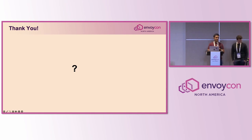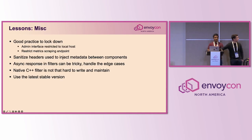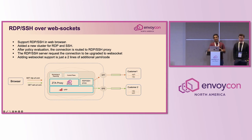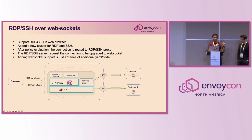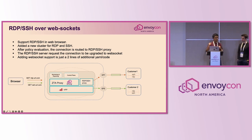Question: why have a separate SSH and RDP proxy in addition to the ZTA proxy? Envoy handles all HTTP and HTTPS, but for RDP and SSH in the browser you need much more — including drawing the user's screen. We didn't want to extend Envoy that way; we wanted to isolate both components. Additionally, the RDP and SSH proxy as a separate cluster can be independently scaled to handle more load.